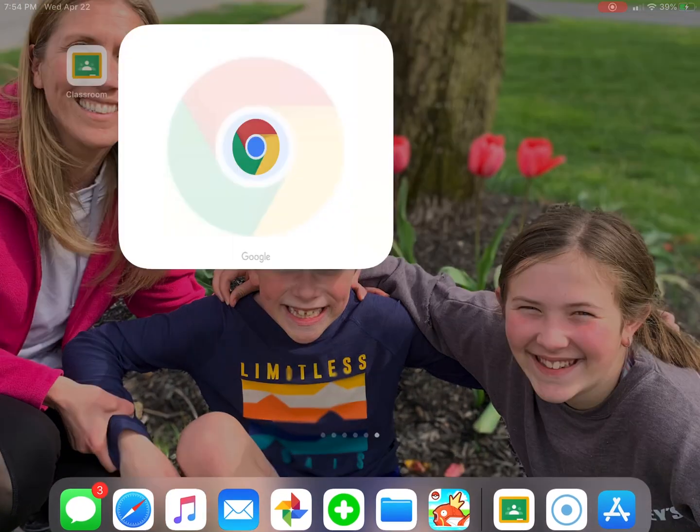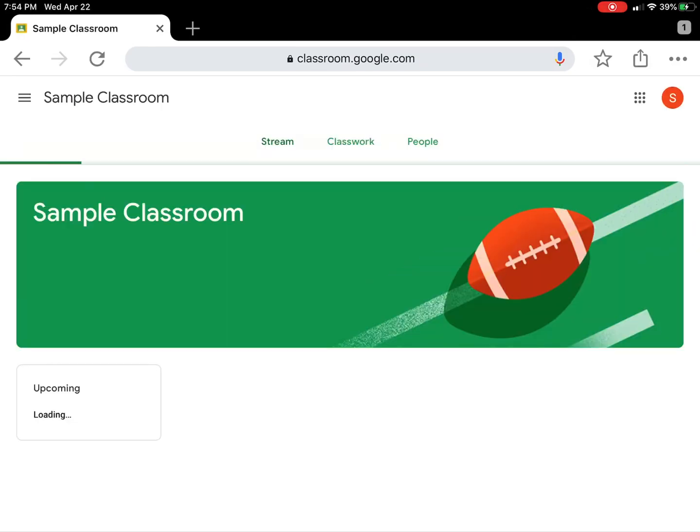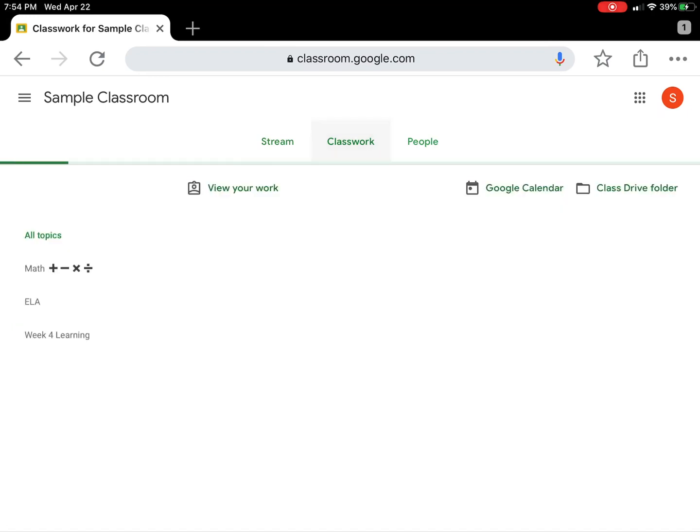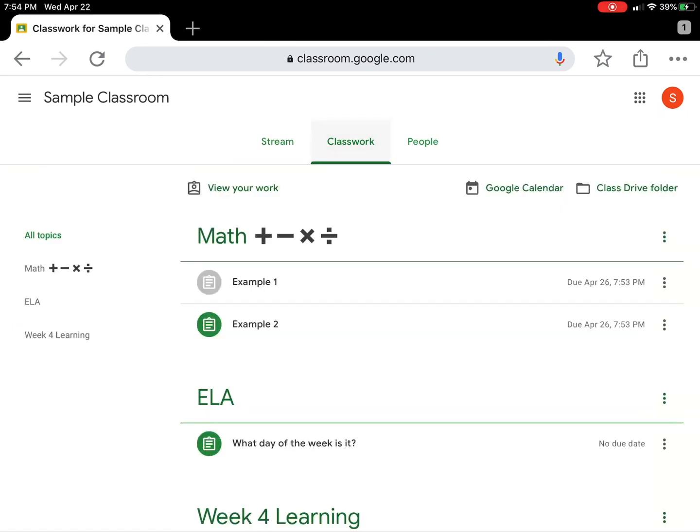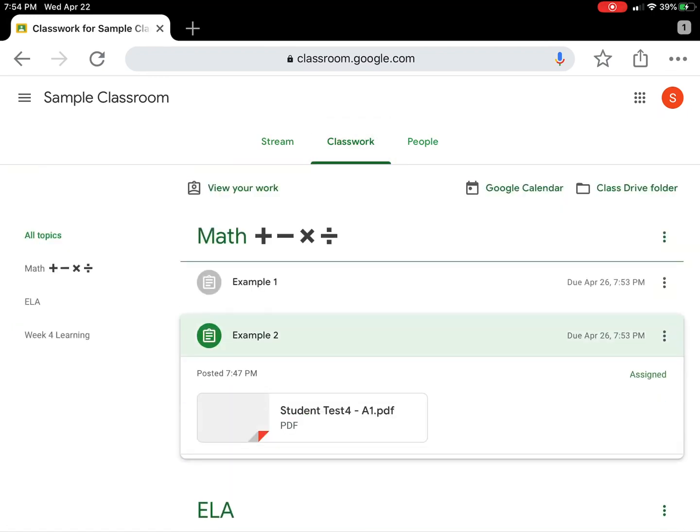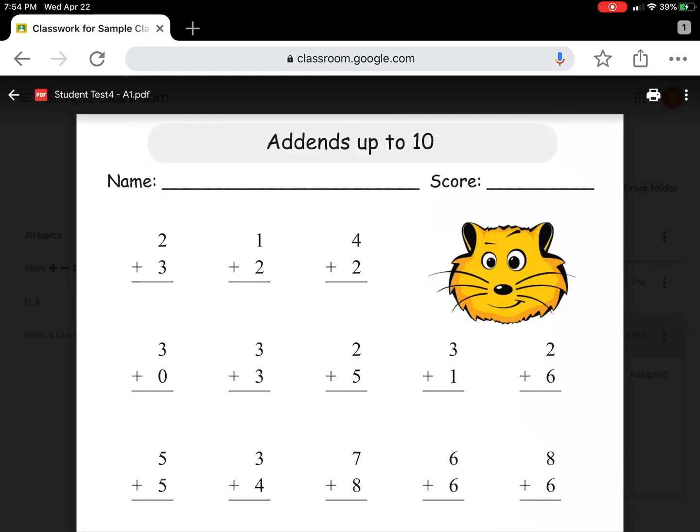Another way to do it would be to go into the Chrome browser. We're going to go to classroom.google.com, select the specific classroom, select classwork. In this case we're going to select example 2 and then select the PDF.